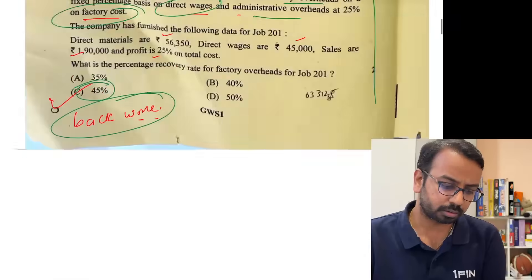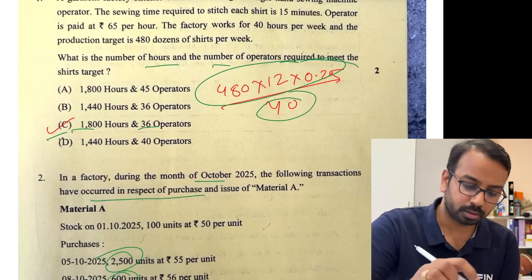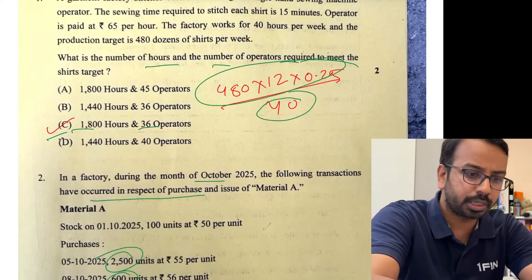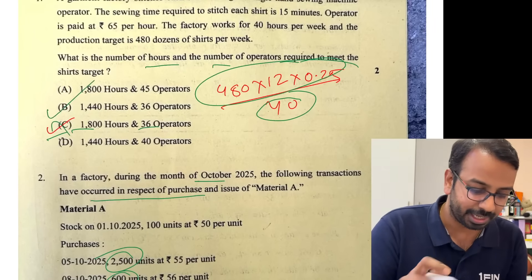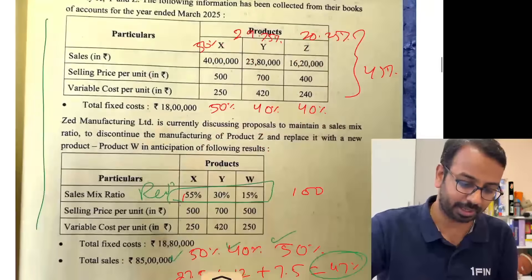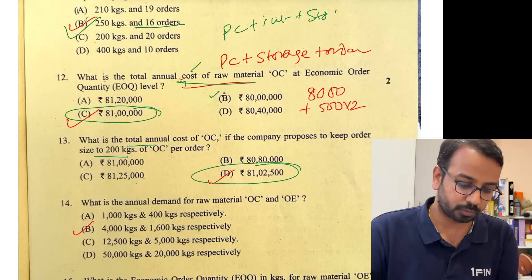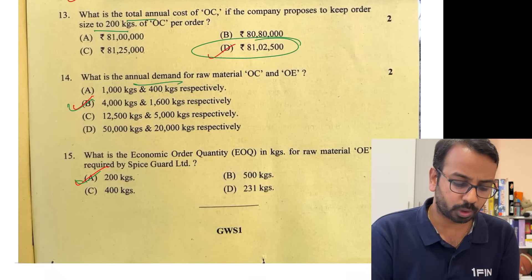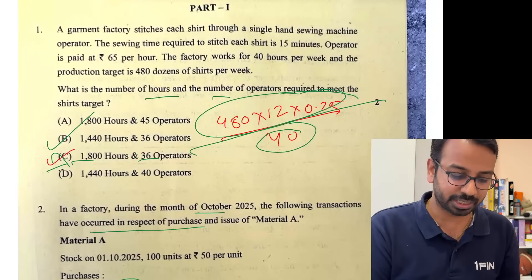Correction — the first answer is 1440, option B. The calculation is 480 into 12 into 0.25 divided by 4, which gives 1440. I wrote the calculation correctly but in a hurry made an incorrect statement. Total annual cost for 200 kgs is 81, annual demand is 4600, and EOQ is 200. The calculation is right — it has to be 1440.